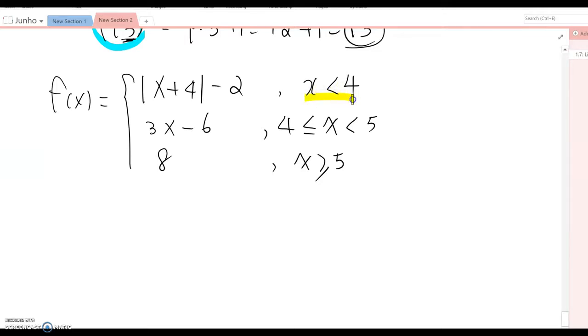Now as you see, we have three different conditions here. Which means any x value below 4 uses this function. If x is between 4 and 5, 4 is inclusive, then you are using this function. And if x is bigger than or equal to 5, then use this function basically.